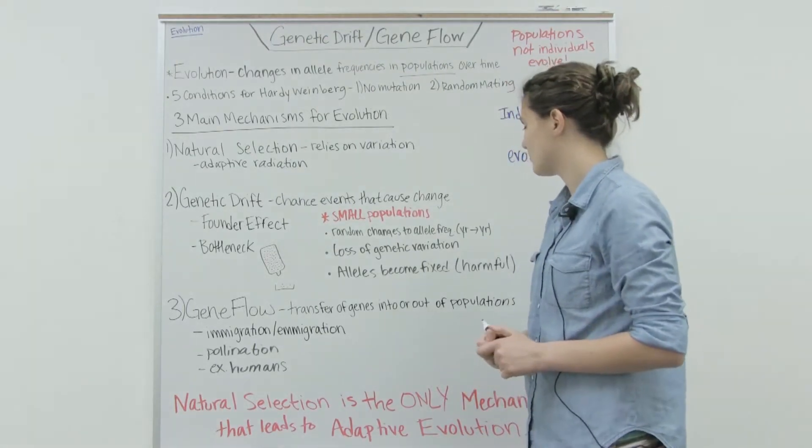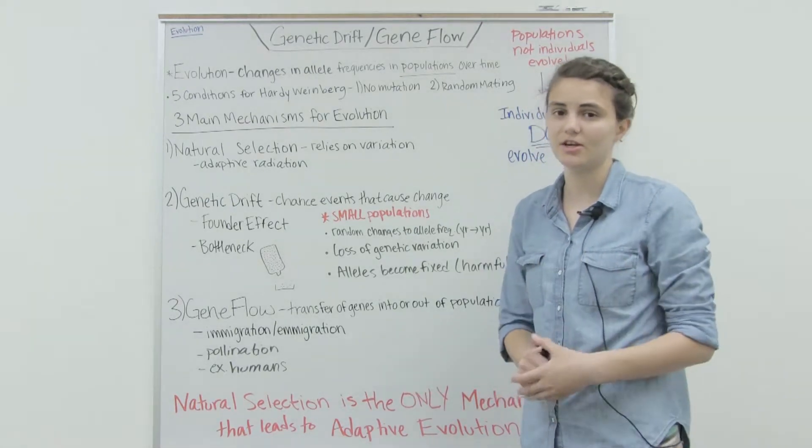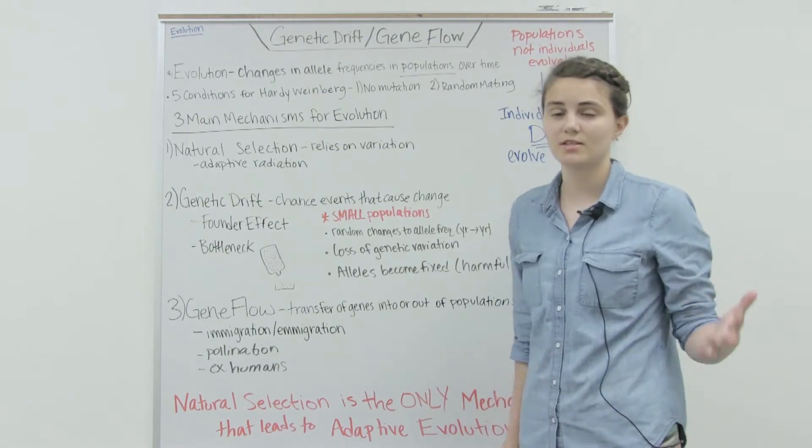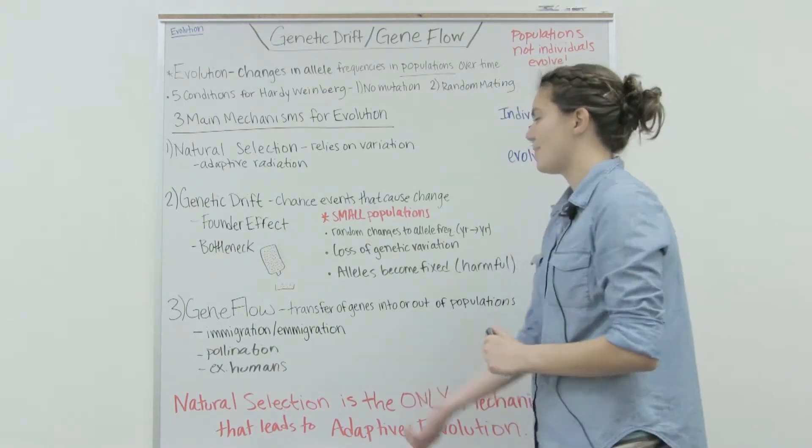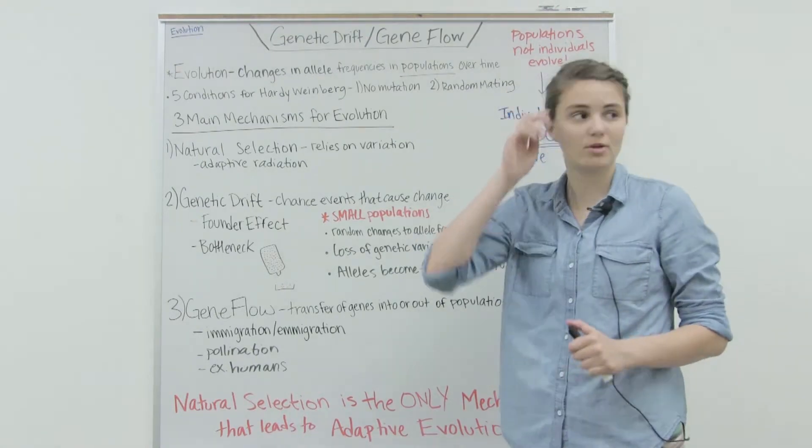Other things about genetic drift: they're random changes and can fluctuate from year to year. One year, by random chance, one allele might be more prominent in the population, and the next year another allele. That also is helpful when you have a smaller population.